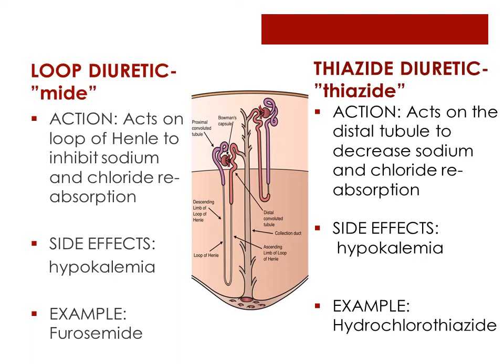First, loop diuretics end in -mide, and these are our most potent diuretics — heavy hitters. They act on the loop of Henle in the nephron to inhibit sodium and chloride reabsorption. The most common one is furosemide, or Lasix. With this drug, we must watch for hypokalemia. Thiazide diuretics are the most common class, decreasing sodium and chloride reabsorption in the distal tubule. Again, monitor for hypokalemia. Hydrochlorothiazide is the most popular. Many times supplemental potassium may be given with loop or thiazide diuretics, especially with strong loop diuretics like Lasix.